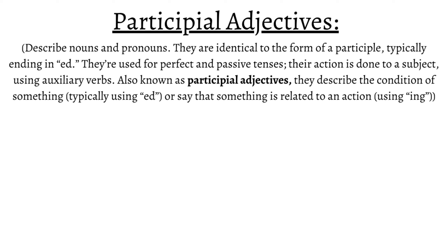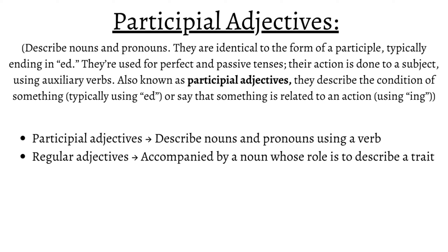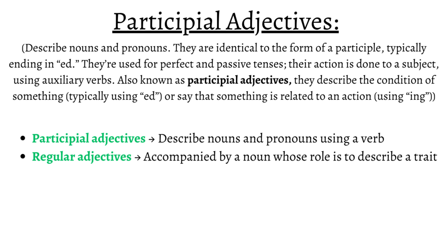Also known as participial adjectives, they describe the condition of something, typically using "-ed", or say that something is related to an action using "-ing". Because of how it's formed, a participial adjective can be differentiated from regular adjectives. Participial adjectives describe nouns and pronouns using a verb, while regular adjectives are accompanied by a noun whose role is to describe a trait. In this video, I'll give demonstrations of both, because their use can be confusing.